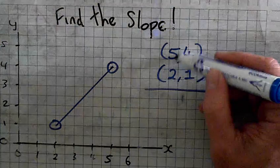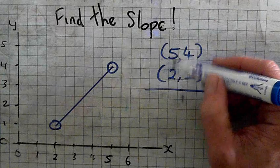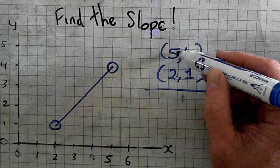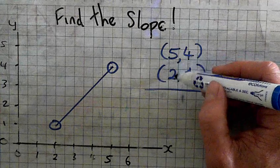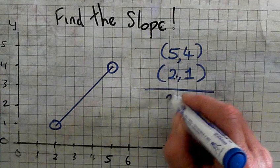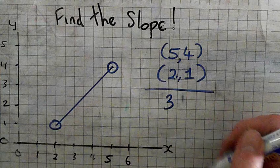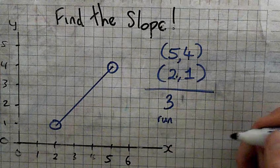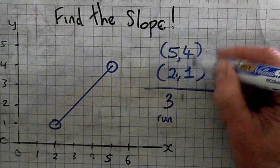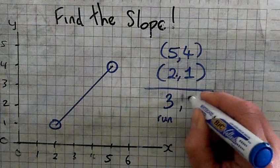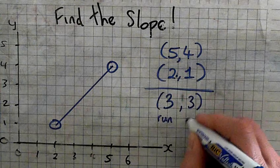Now what's the difference of the two X, Jason? What's the difference between the X values, 5 and 2? It's 3. It's 3. Alright, this is the run. What's the difference in the Y values? 3. That's the rise.